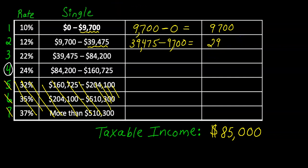I'm going to need a little more room here. Let me write that over here, $29,775. And then I'll continue, I'll take this $84,200. And I will subtract this number, $39,475. And that equals $44,725.